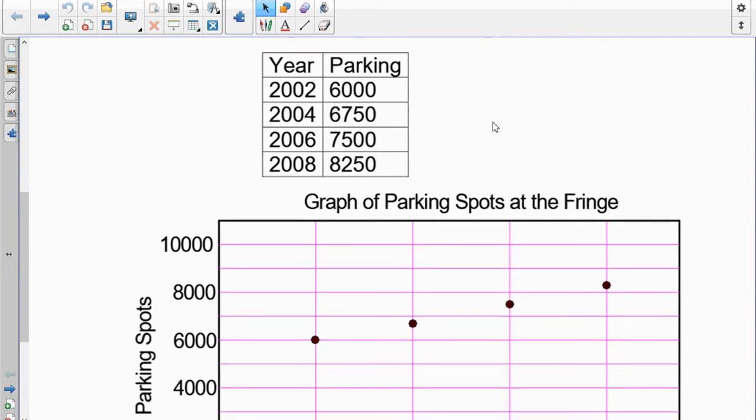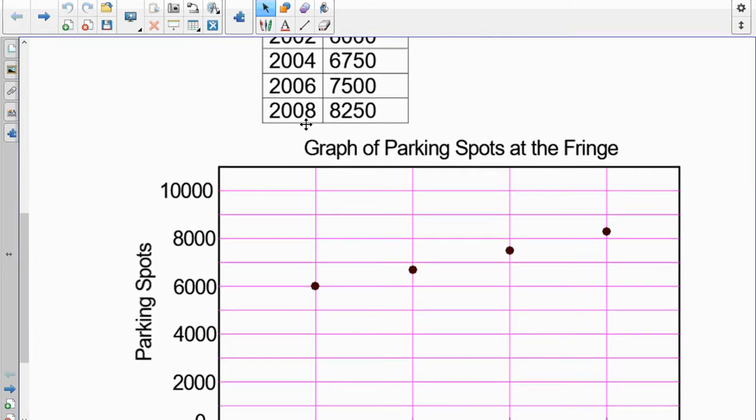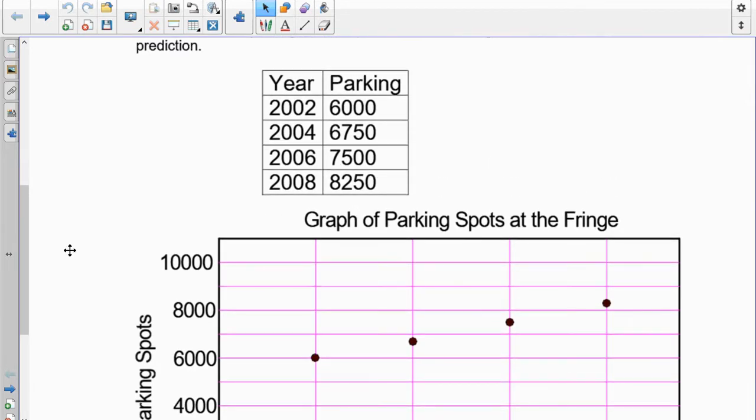What we want to know is, if they were going to do something, and we know the next couple of years, 2010, 2012, 14, 16, and so on, how would they know how many parking spots to create, or how many would be required?